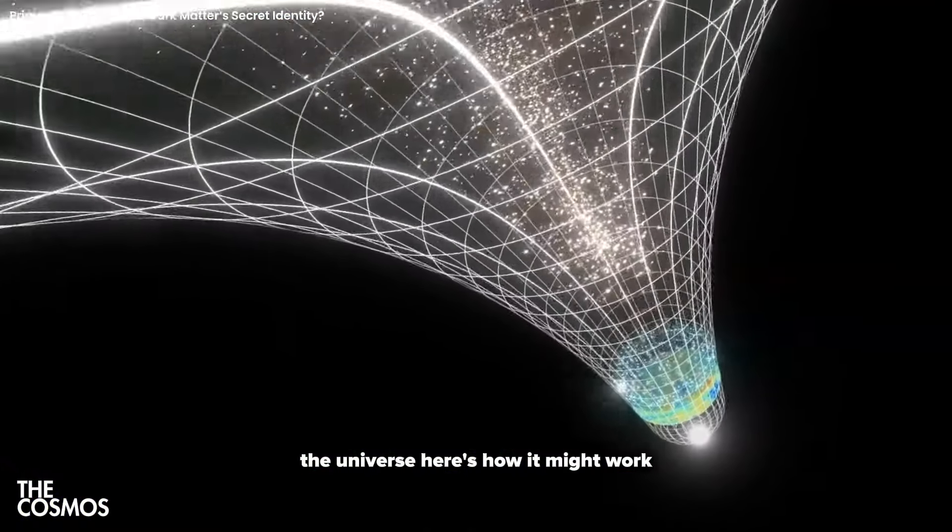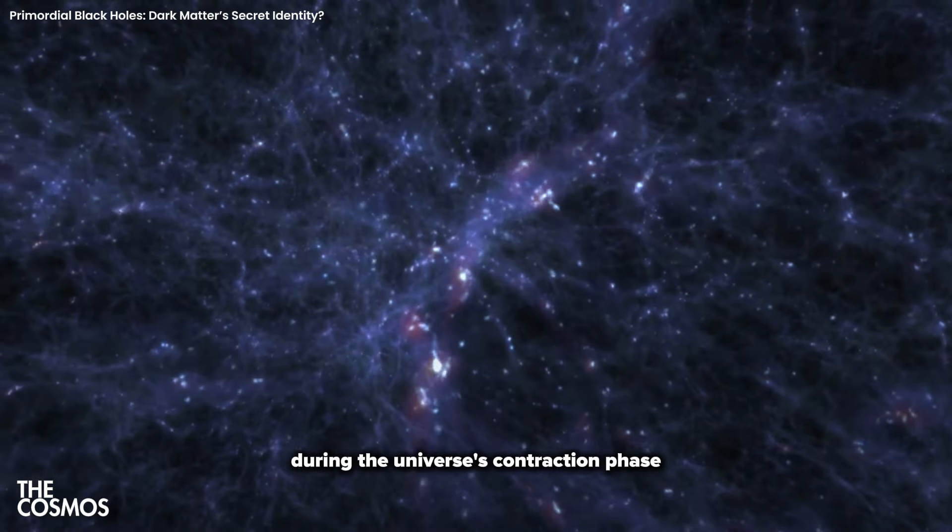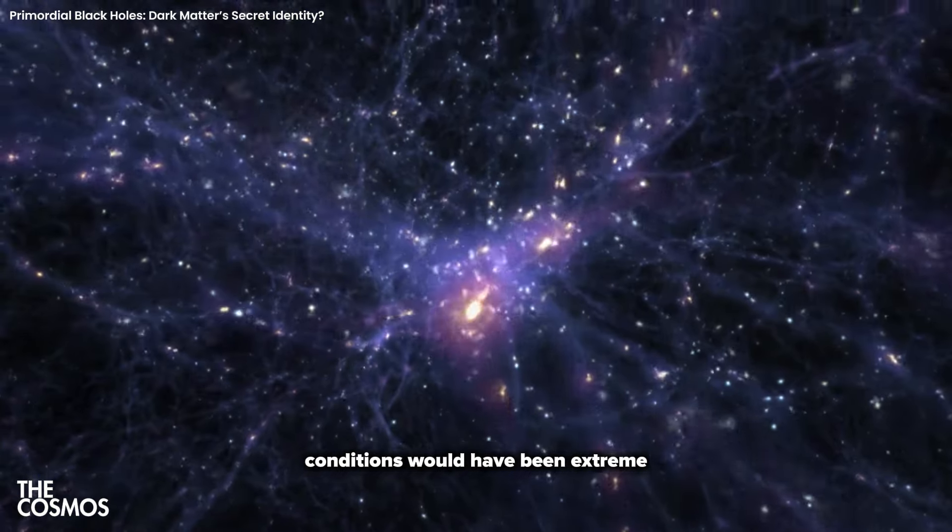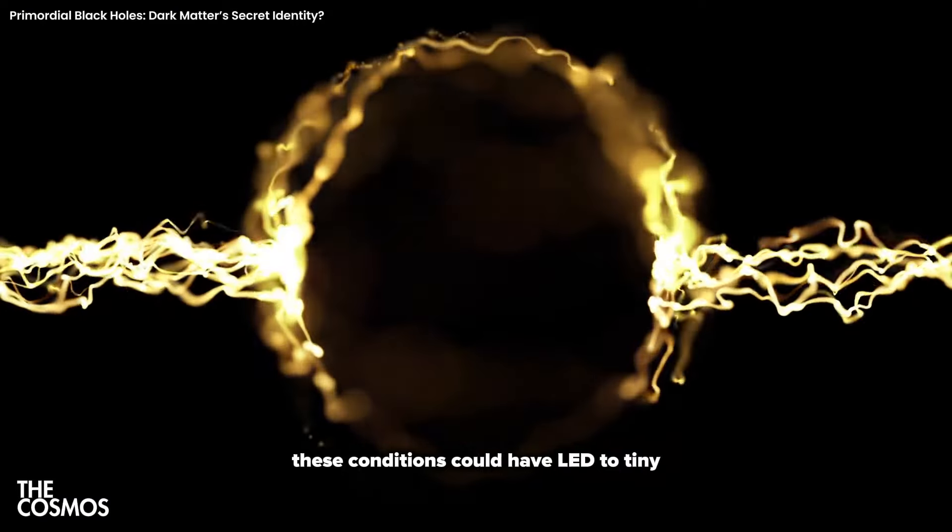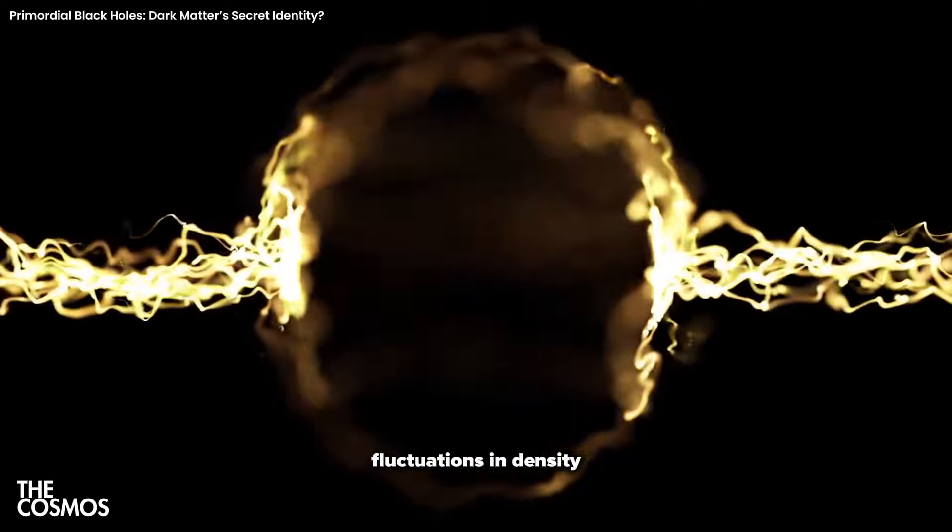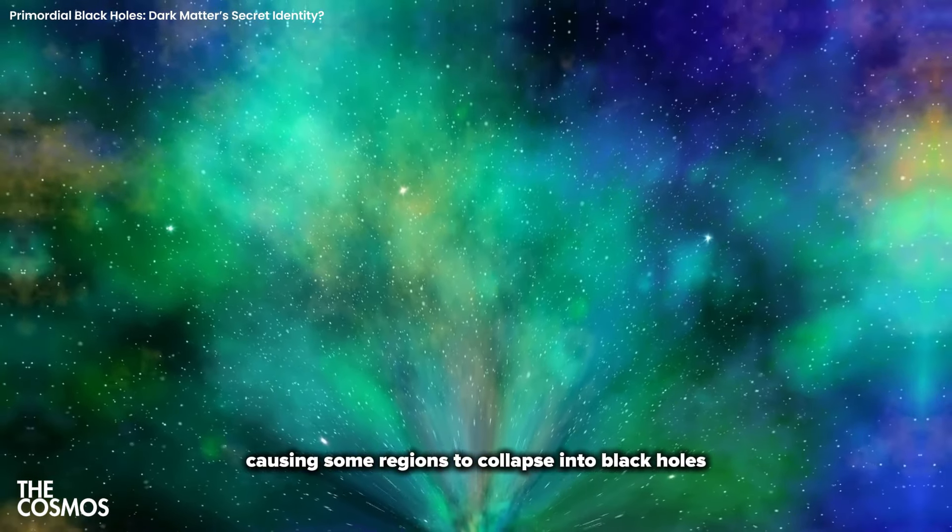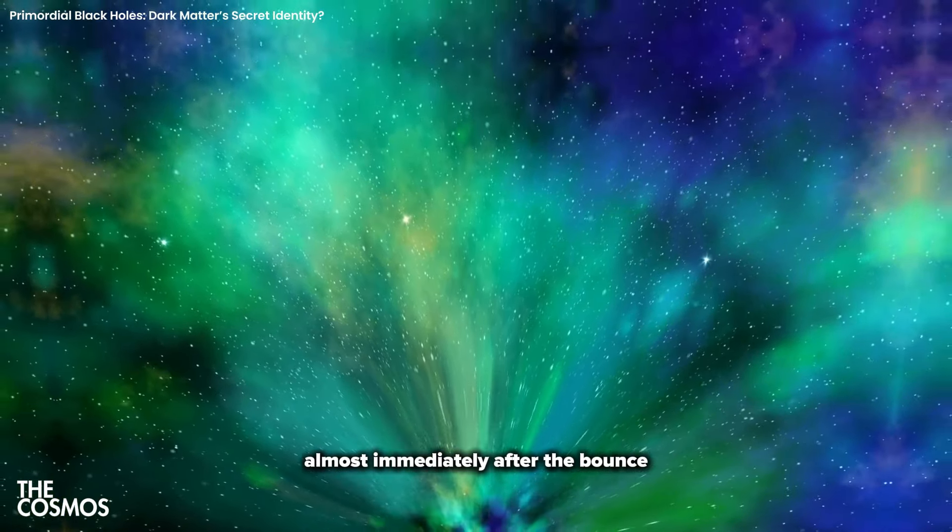Here's how it might work. During the universe's contraction phase, conditions would have been extreme, with incredibly high densities and temperatures. These conditions could have led to tiny fluctuations in density, causing some regions to collapse into black holes almost immediately after the bounce, when the universe began expanding again.